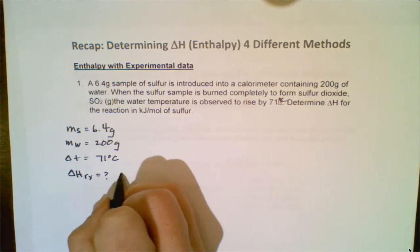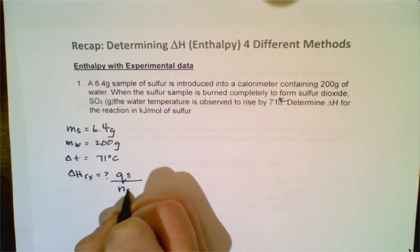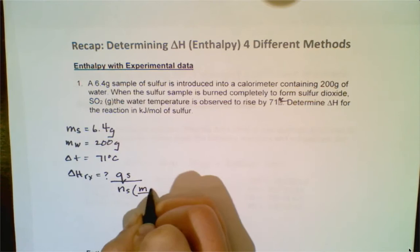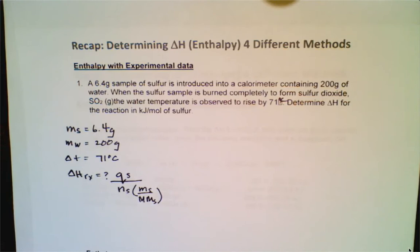My target equation would be Q of the combustion of sulfur all over moles of sulfur — Q over N. We also know that moles can be substituted with mass of sulfur over the molar mass of sulfur. So moving forward, what we want to do is figure out Q of the water by doing MC∆T.